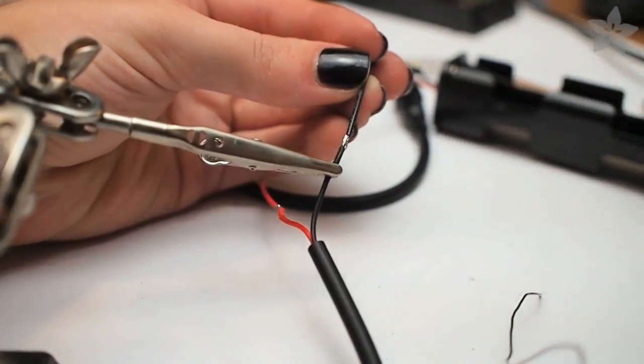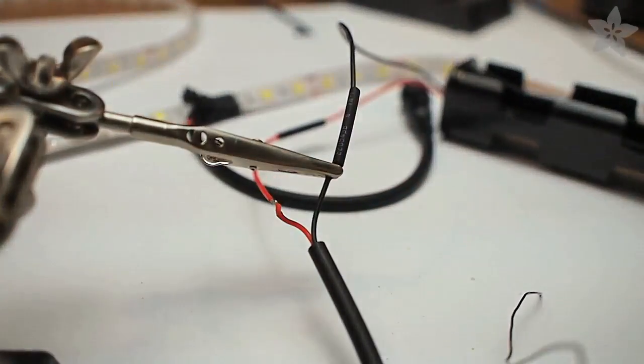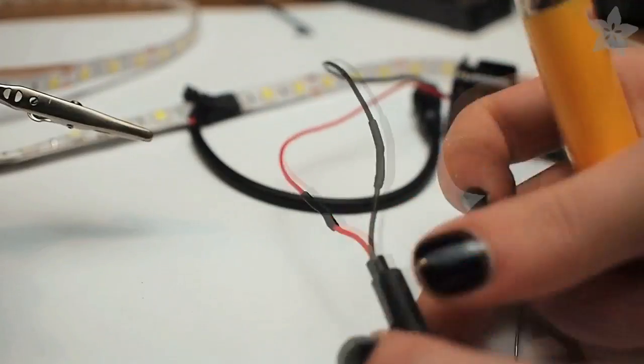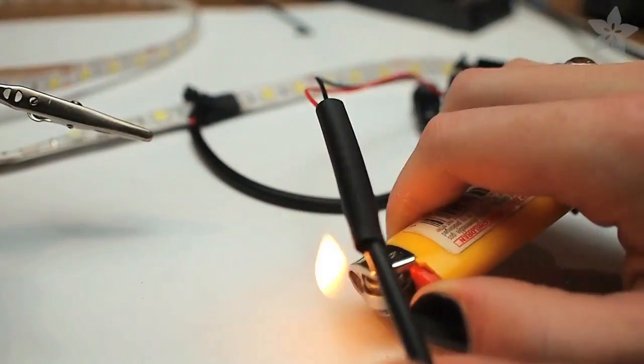Solder the other part of your power cable to the battery holder, having first slid a piece of heat shrink tubing over each wire and another larger piece of heat shrink tubing to cover those after you've shrunk them.